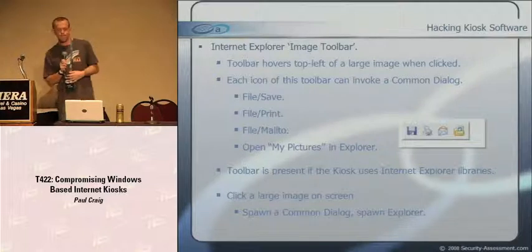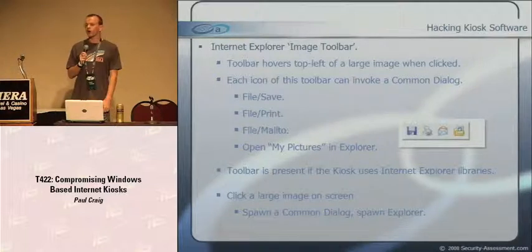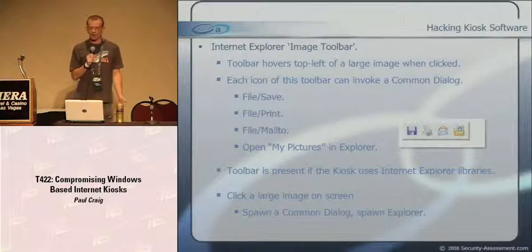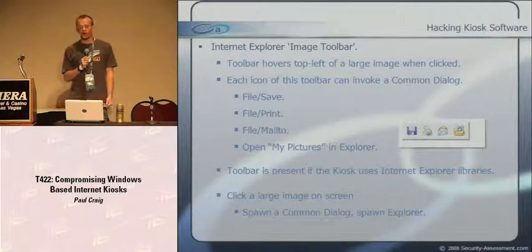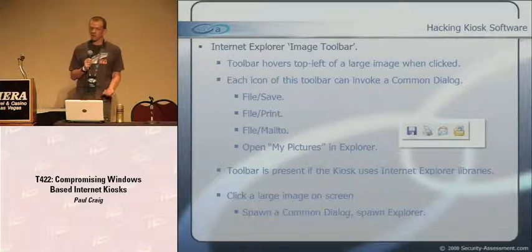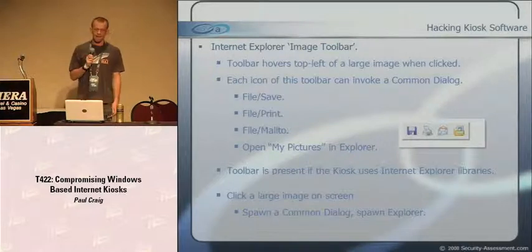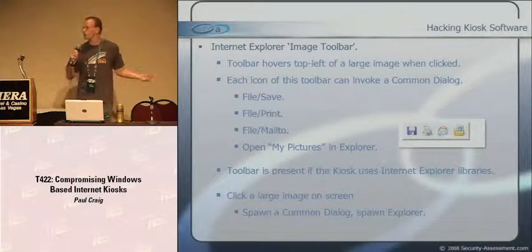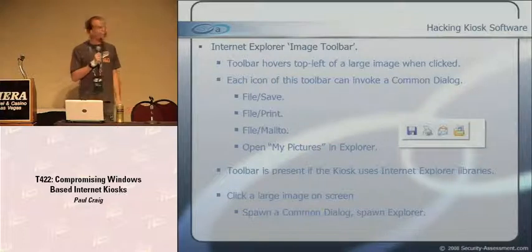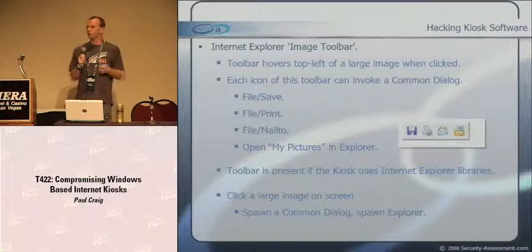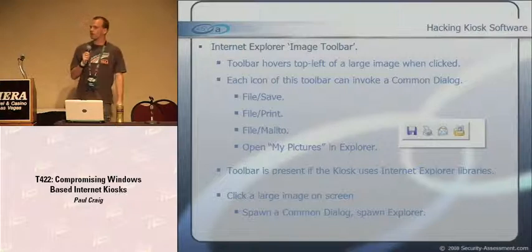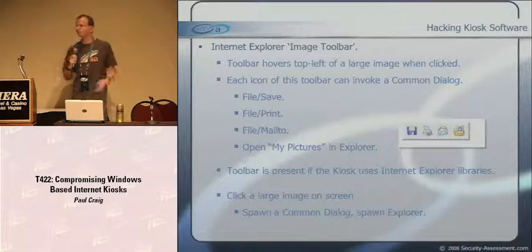The Internet Explorer image toolbar is a toolbar that hovers in the top-left when you click a really large image. Each icon can invoke a common dialog - file save, file print, file mail-to, and 'open my pictures in Explorer,' which directly spawns Explorer. If the kiosk is written using IE libraries, this toolbar is present because it's part of those libraries. Click a large image somewhere on the kiosk - if that toolbar pops up, you win. You can also use file print to print to a file and spawn a file open dialog.